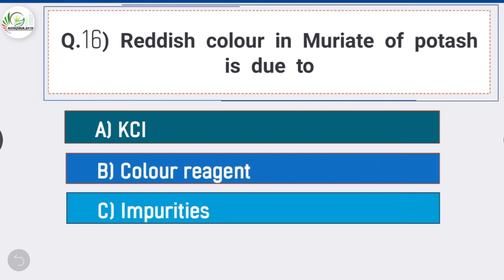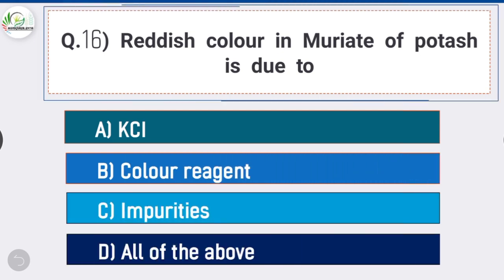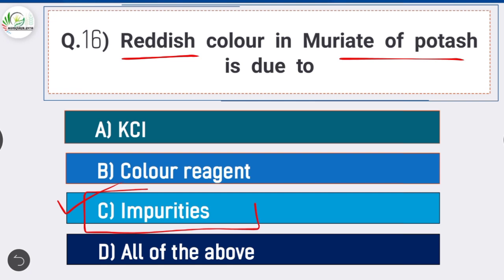Question number 16: Reddish color in muriate of potash is due to? Answer is option C, impurities. Reddish color in muriate of potash is due to impurities.